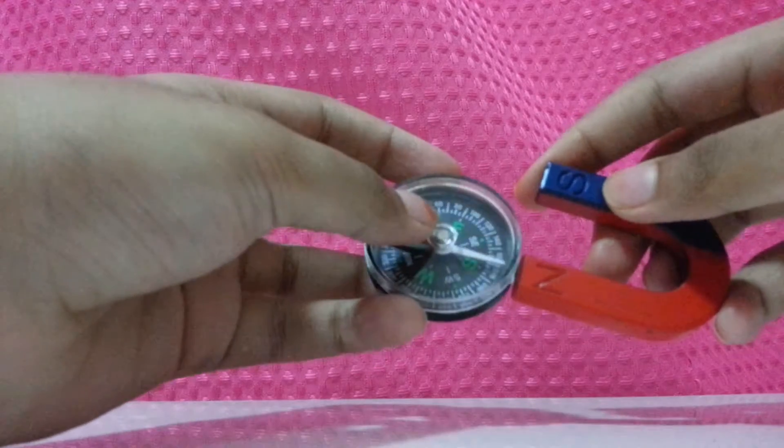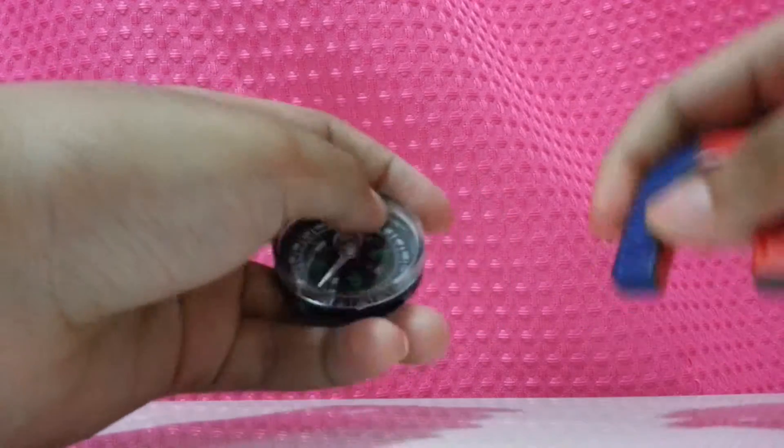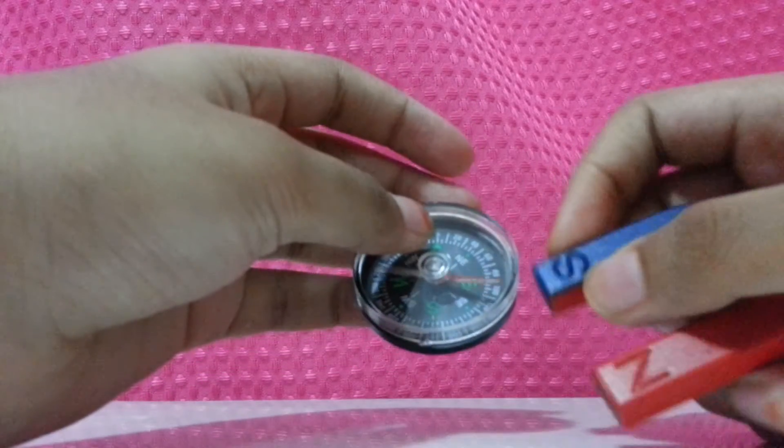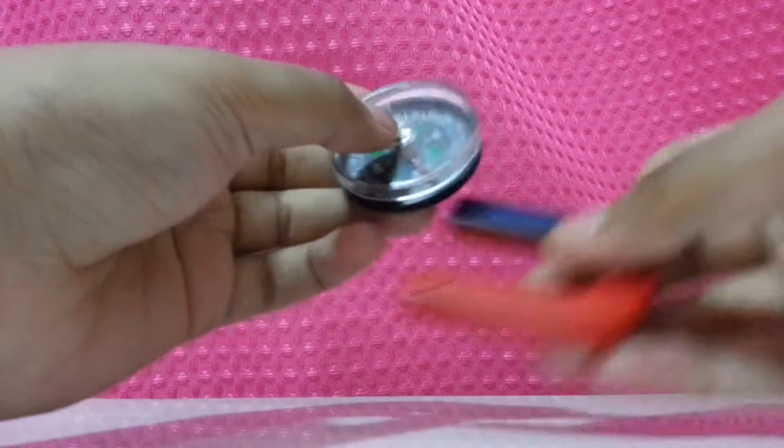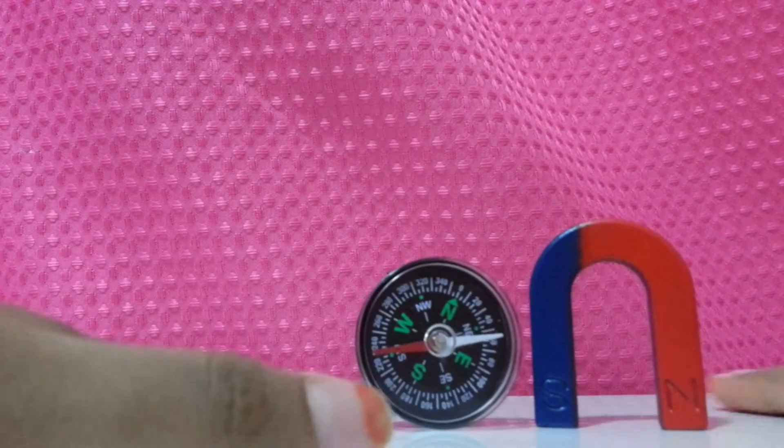And when you show the north and the south they also attract because unlike poles attract. So I'm trying to show this to the white one because it's coming because like poles never attract. They always repel.